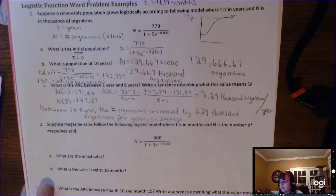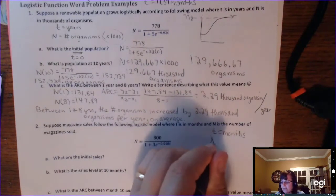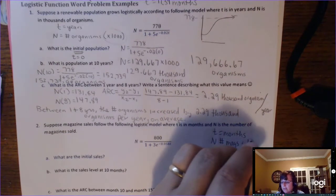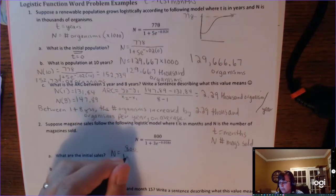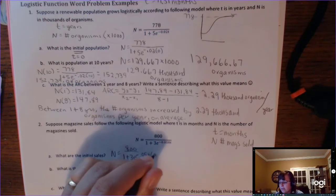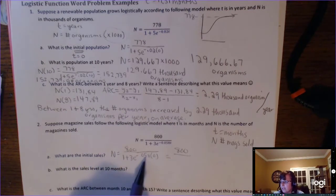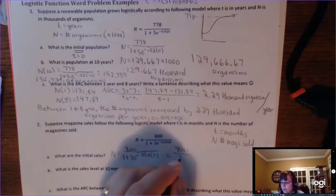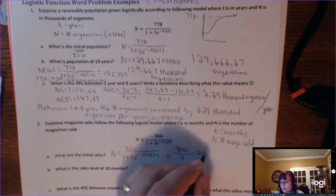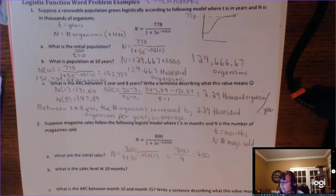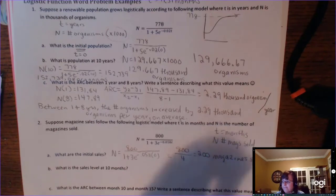Suppose magazine sales follow a logistic model where T is in months and N is number of magazines sold. To find initial sales, put 0 in for T: 800 over 1 plus 3E to the negative 0.058 times 0. That becomes 800 divided by 4, which is 200 magazines sold.